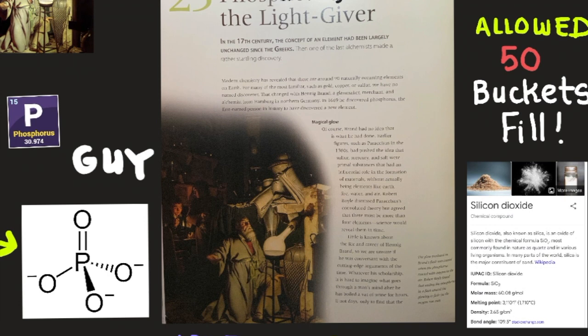Here is an image from a chemistry book explaining the general history. In the 17th century, the concept of an element had been largely unchanged since the Greeks. Then one of the last alchemists made a startling discovery — the last alchemist, because after alchemy came real science and the renaissance. Modern chemistry has revealed there are around 90 naturally occurring elements on earth. Hennig Brand — a glass maker, merchant, and alchemist in Hamburg — was in 1669 the first named person in history to have discovered a new element.